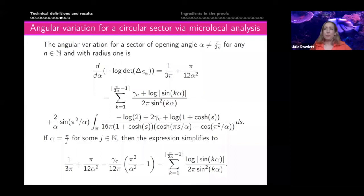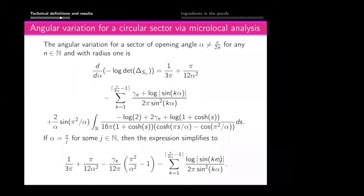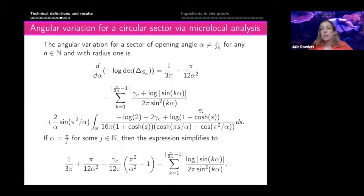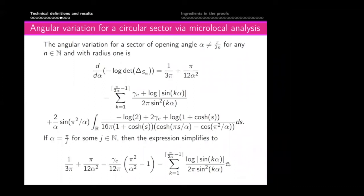A clarification: the exclusion of angles of the form π/2n doesn't mean those cases are excluded altogether — if α = π/j for some integer j, it falls into the simplified case, and the formula becomes the simpler expression. So the second formula sort of covers those cases.